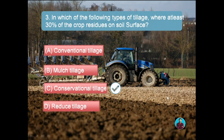Mulch tillage refers to leaving crop residues on the soil surface in an undisturbed manner. Reduced tillage refers to the preparation of soil for planting and cultivation of soil after planting.